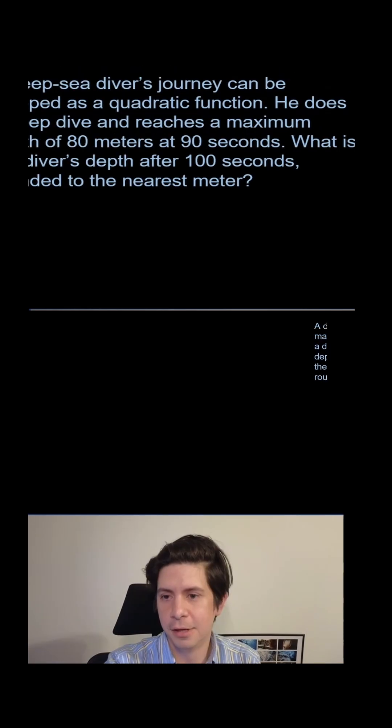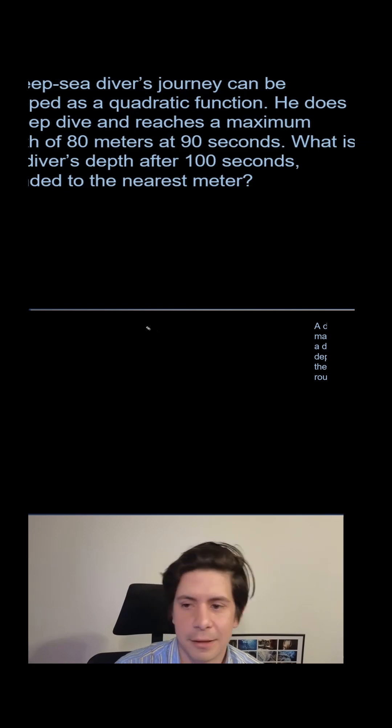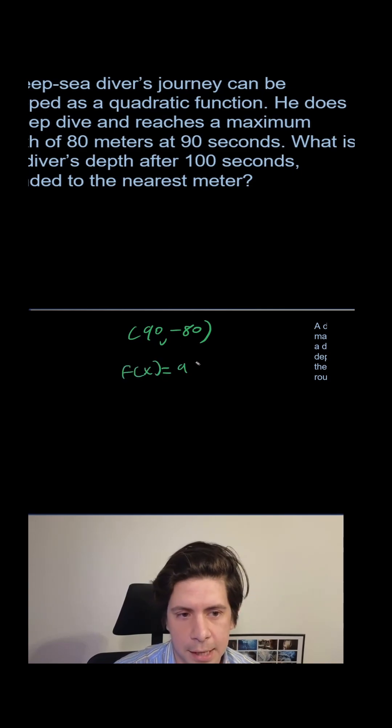All right, let's try it out. So you could think this is like the vertex, a vertex at 90, negative 80. Be careful not to mix those numbers up. Sometimes I've done that. And you do f of x equals a parentheses x minus 90 squared minus 80.